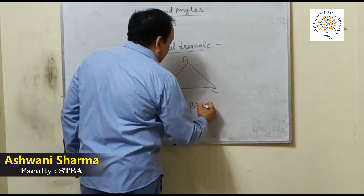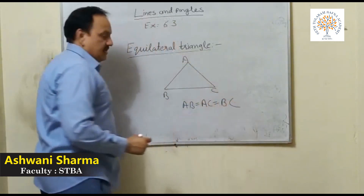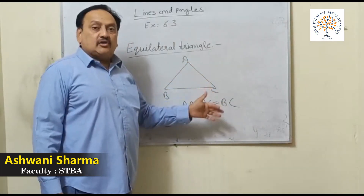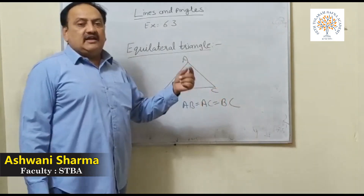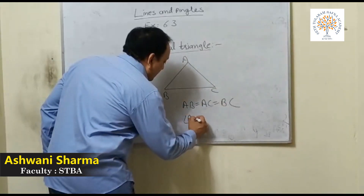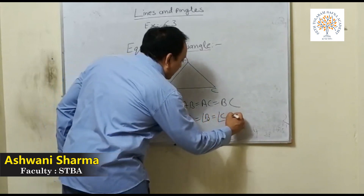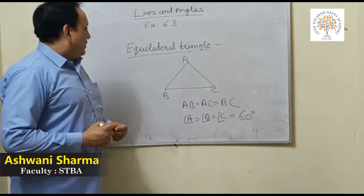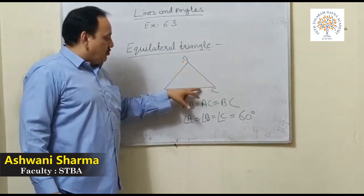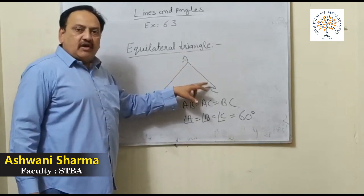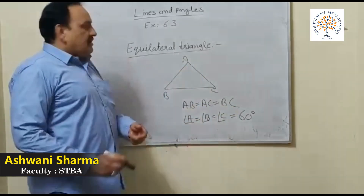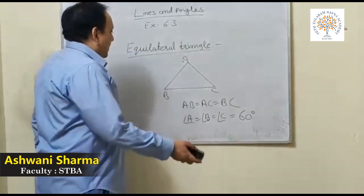In an equilateral triangle, all sides are equal: AB equals BC equals AC. All angles are also equal, and they are all equal to 60 degrees — angle A equals angle B equals angle C equals 60 degrees. Second type is the isosceles triangle.